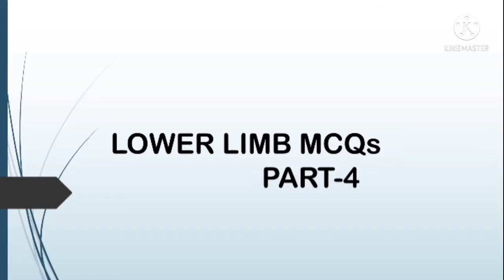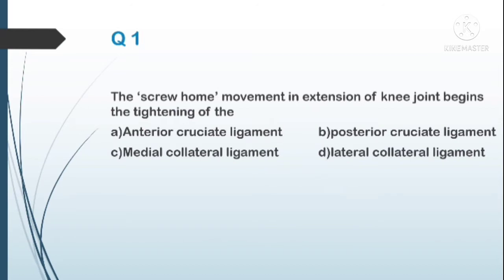The first question: the screw home movement in extension of the knee joint is behind the tightening of which ligament? A) anterior cruciate ligament, B) posterior cruciate ligament, C) medial collateral ligament, D) lateral collateral ligament. The answer is A, anterior cruciate ligament.